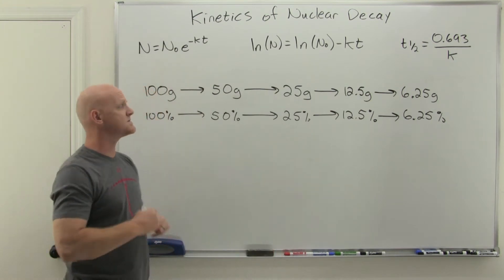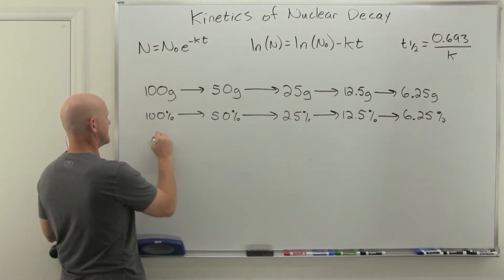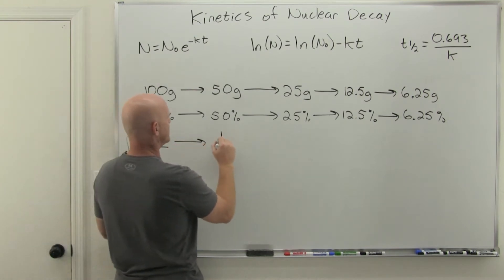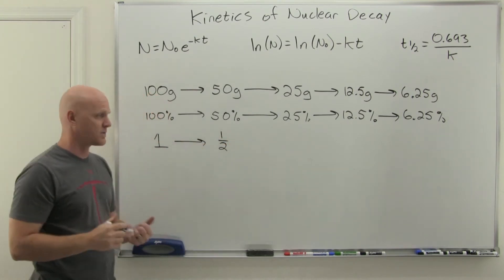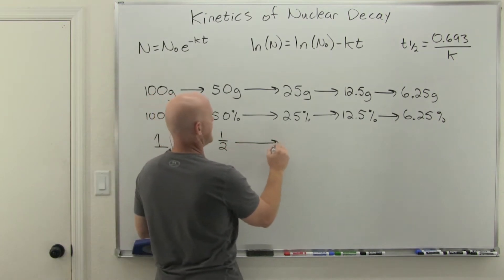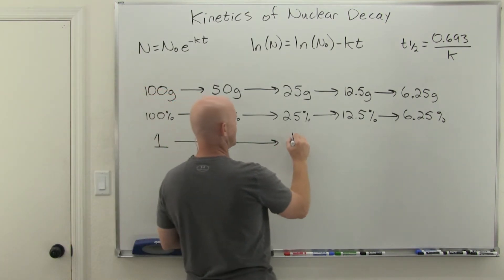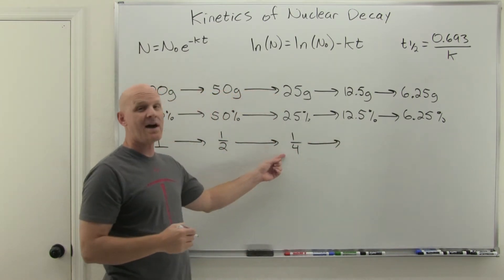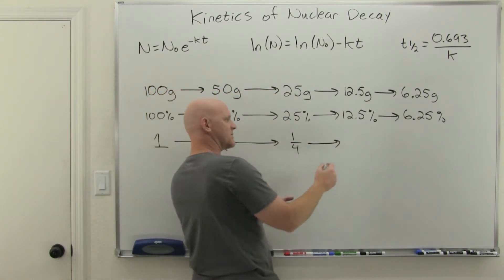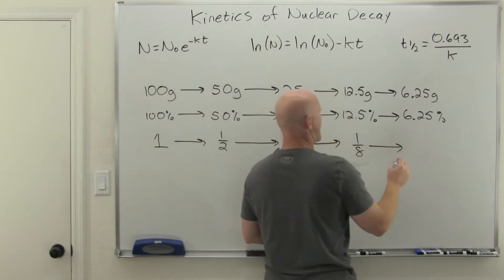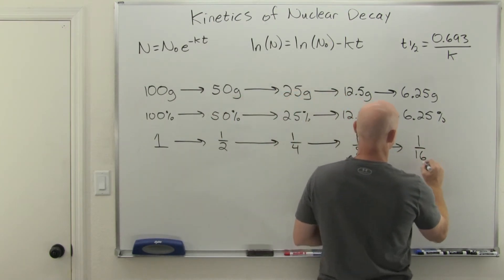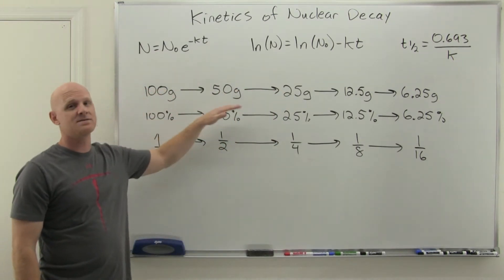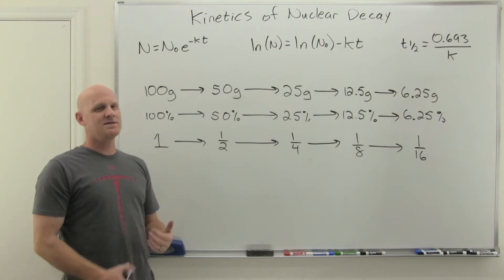You could also express this in terms of fractions. Initially you start with 1 — all of it. After a half-life, you'd have one-half. After another half-life, one-half of one-half is one-fourth. After another, one-half times one-fourth is one-eighth. Then one-sixteenth, and so on. So you can do this in terms of mass, percents, fractions — you can also do this in terms of radioactivity.